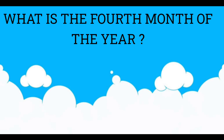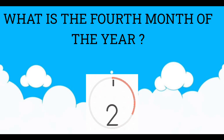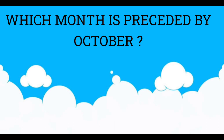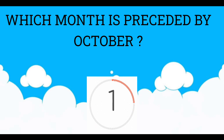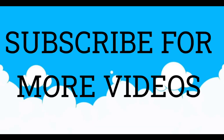What is the fourth month of the year? April. Which month is preceded by October? August. Subscribe for more videos.